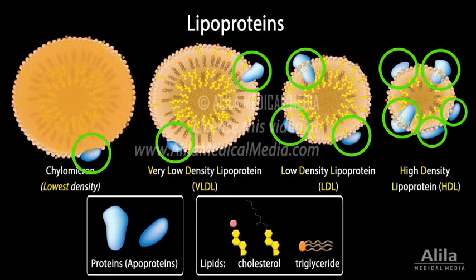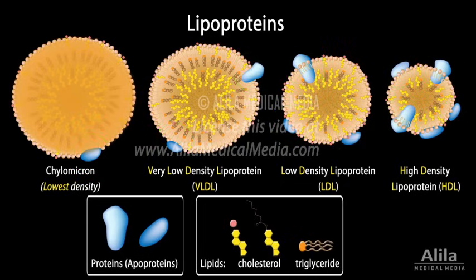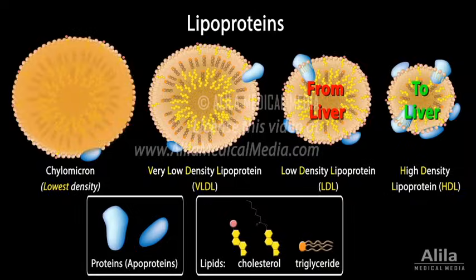Different types of lipoproteins have different sets of proteins on their surface. These proteins serve as address tags, determining the destination and hence function of each lipoprotein. For example, low-density lipoprotein, LDL, carries cholesterol from the liver to other tissues, while high-density lipoprotein, HDL, returns excess cholesterol to the liver.